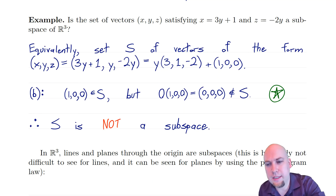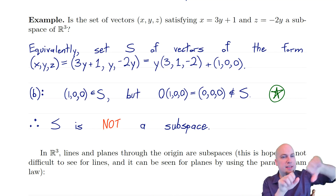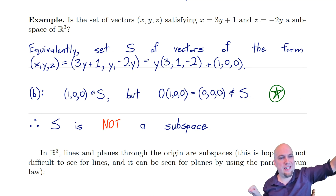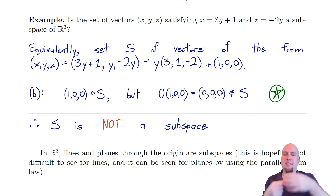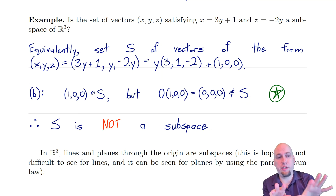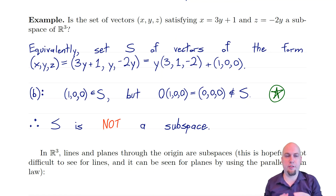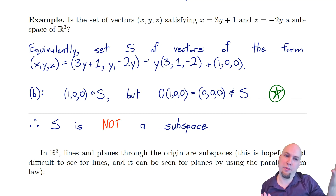Geometrically, this set looks like a line, but it's a line that does not pass through the origin, and that's the problem. Subspaces do generalize lines and planes, but they have to go through the origin as well. So our intuition for subspaces is: lines, planes, and infinitely long flat things that go through the origin.